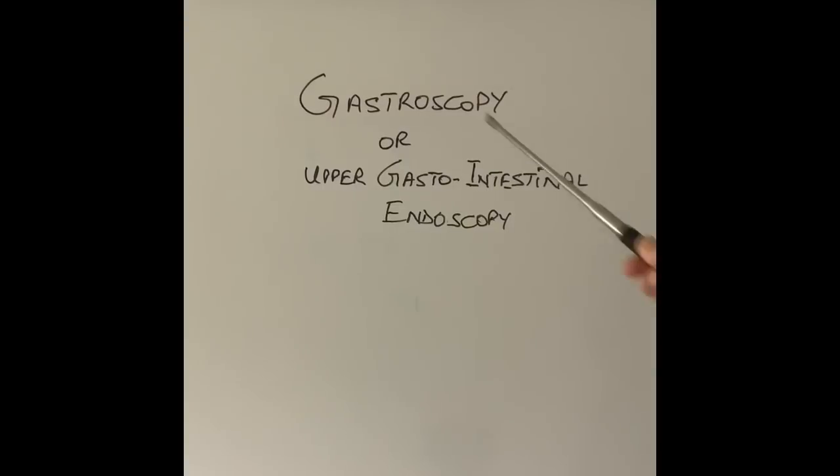Today I'm going to talk about a camera test of the stomach called gastroscopy or upper gastrointestinal endoscopy. I'm going to first talk to you and show you what the instrument looks like and what it does, how it is put down, how far down it goes into our digestive system, what can be done during the procedure, and what pathologies can be picked up. What can be done about it.